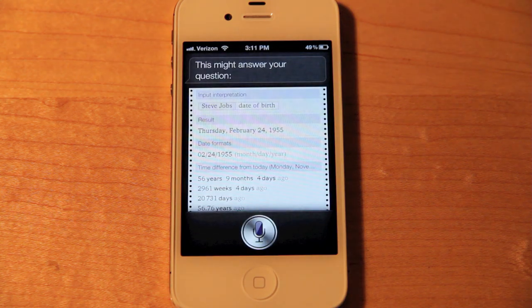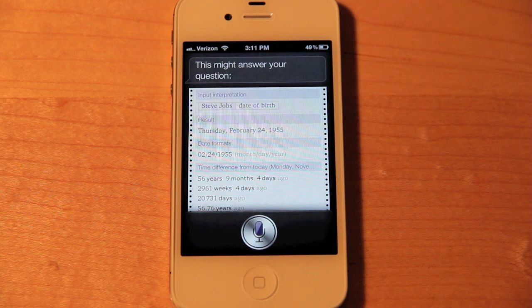And there you go. Steve Jobs, date of birth, Thursday, February 24th, 1955. And Wolfram Alpha has all sorts of cool info. You should check it out sometime on the website, WolframAlpha.com.